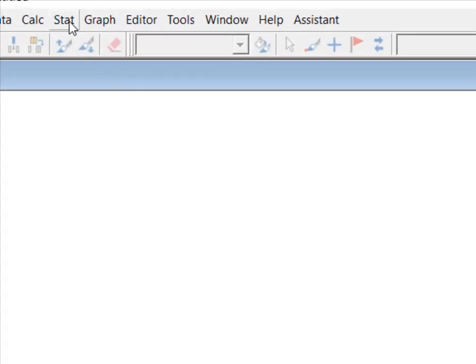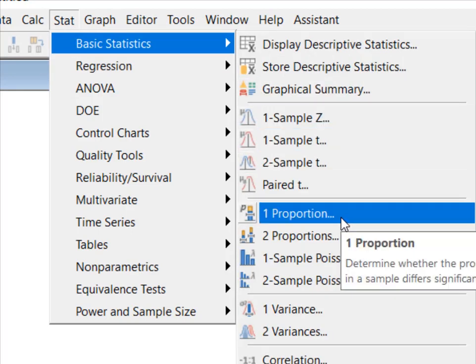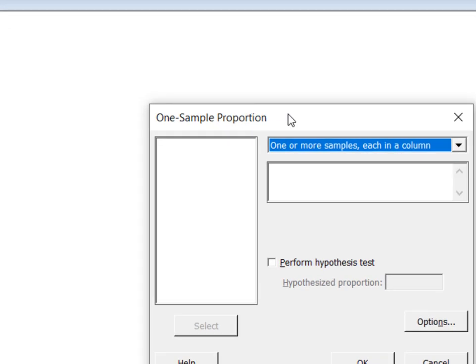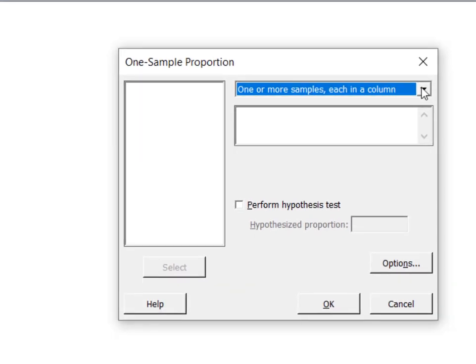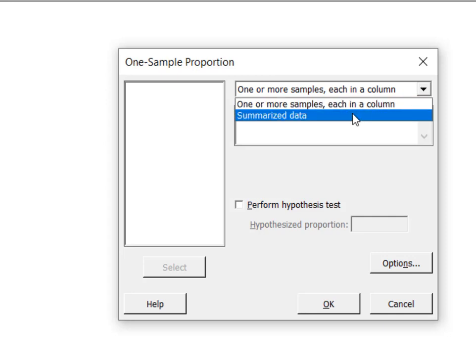I'm over here in Minitab. I'm going to go to Stat, Basic Statistics. We're going to run a one proportion test. We do have summarized data, so we're going to go ahead and select that.